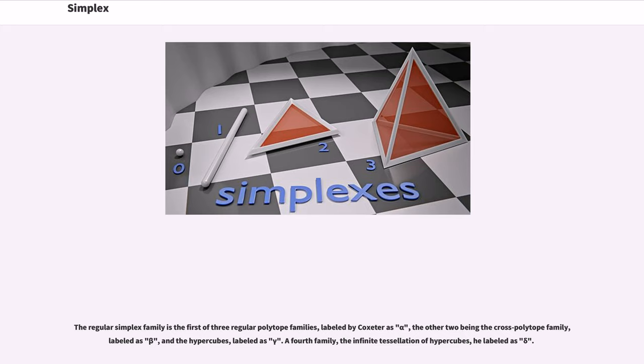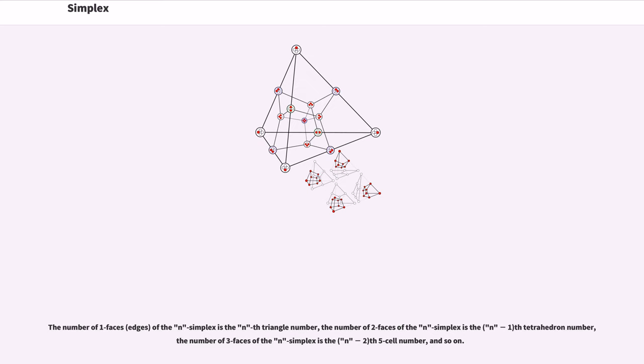The regular simplex family is the first of three regular polytope families, labeled by Coxeter as alpha n, the other two being the cross polytope family, labeled as beta n, and the hypercubes, labeled as gamma n. A fourth family, the infinite tessellation of hypercubes, he labeled as delta n. The number of 1-faces of the n simplex is the nth triangle number, the number of 2-faces of the n simplex is the nth tetrahedron number, the number of 3-faces of the n simplex is the nth 5-cell number, and so on.